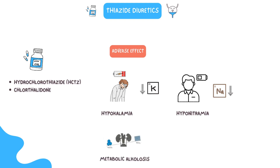Next, metabolic alkalosis. Due to an increase in potassium and hydrogen ion excretion via aldosterone-mediated mechanisms in the intercalated cells of the collecting tubule, patients taking thiazide diuretics may develop a hypokalemic metabolic alkalosis.